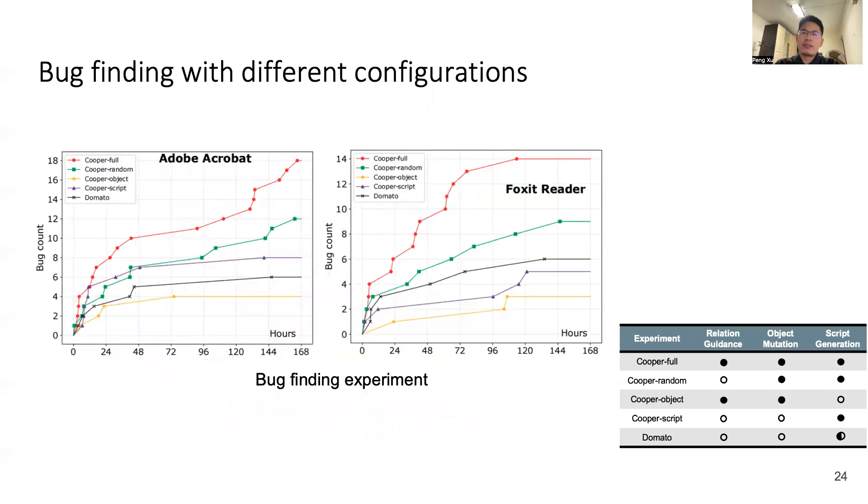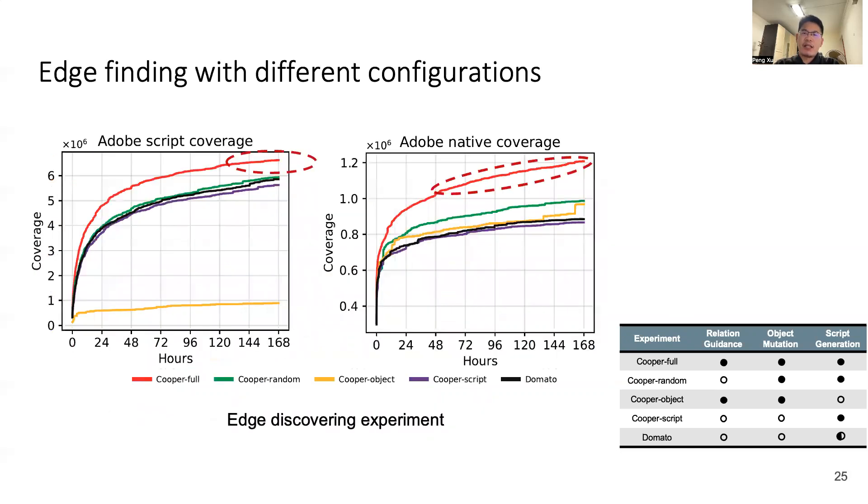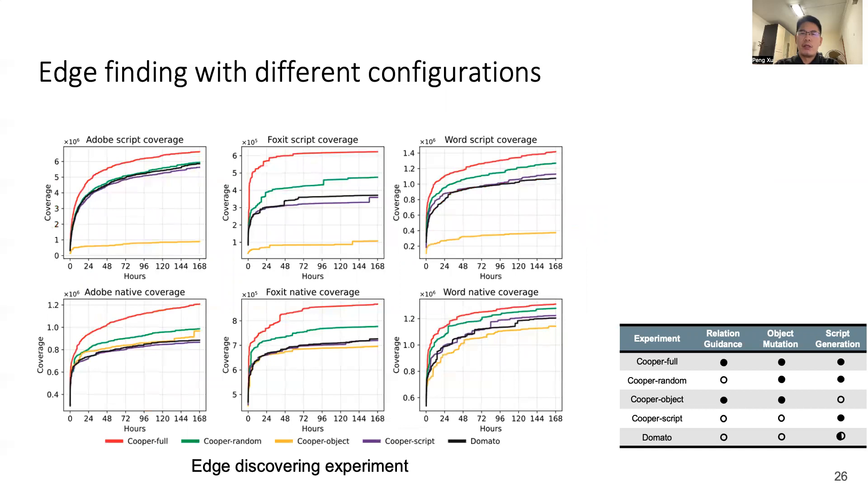We also do experiments on Foxit Reader. The result is similar to Adobe Acrobat. Cooper always finds the most bugs. To test the edge finding ability, we apply all configurations to Adobe Acrobat and record their edge finding history in one week. We record both scripts coverage and native coverage. As we can see from these two figures, Cooper can find the most in both types of coverage. We also do the edge finding experiments on Foxit Reader and Microsoft Word. The result is similar to Adobe Acrobat. Cooper always finds the most coverage. These results can also be proof of our concept that cooperative mutation is essential for finding bugs in binding code.